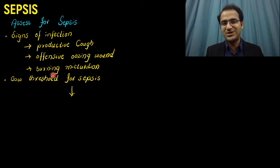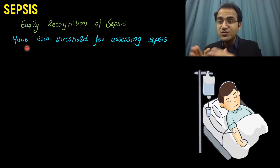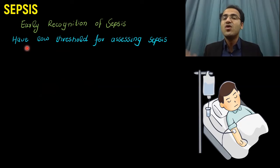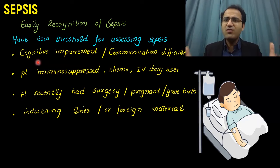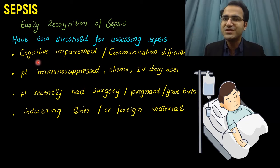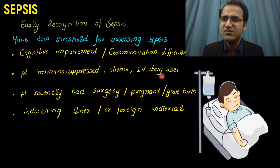Have a low threshold for sepsis because early recognition is very important — early treatment produces much better results. Every hour delay in treatment increases mortality. If a patient suddenly develops cognitive impairment or delirium, particularly elderly patients who abruptly become altered in time, place, and person, they are usually in sepsis with an infection source. Immunocompromised patients — chemotherapy patients, IV drug users — can easily get infection and go into sepsis, so have a low threshold for them.